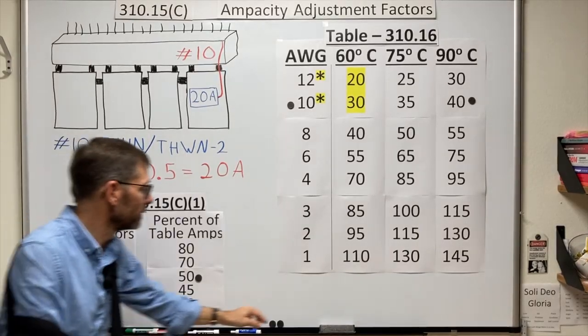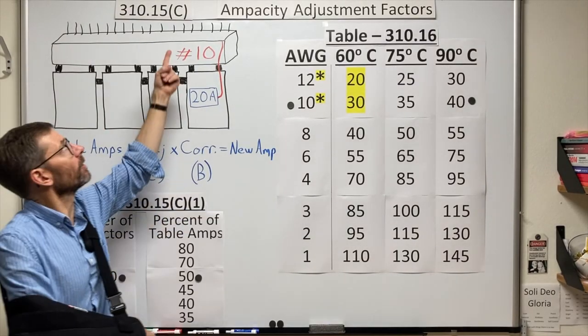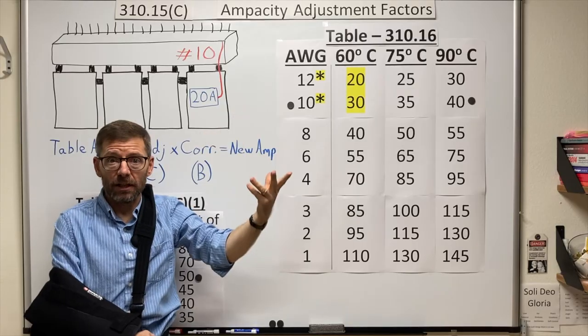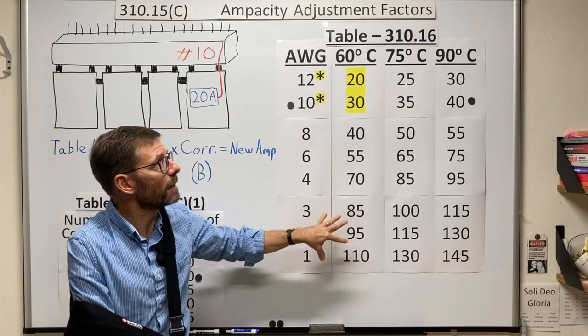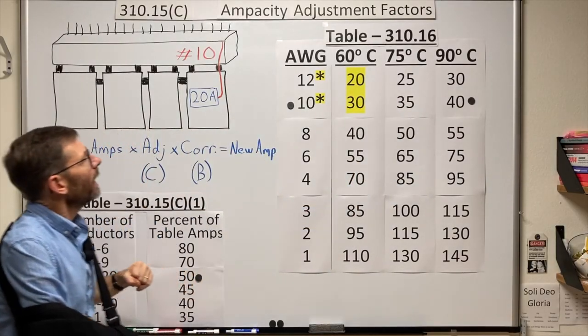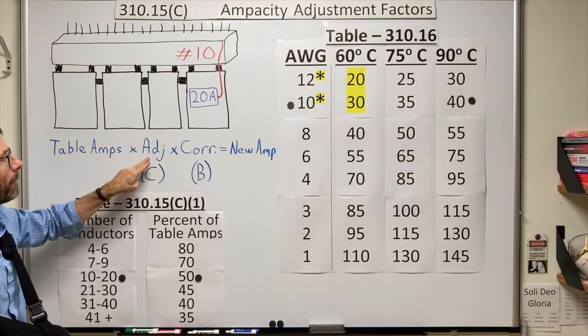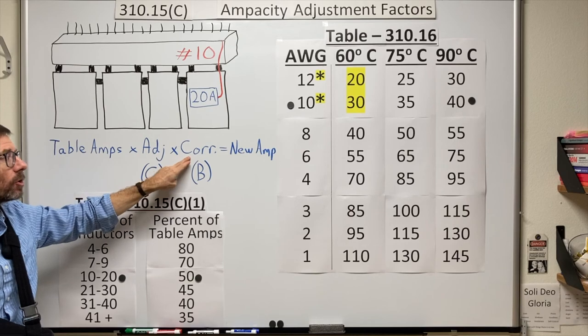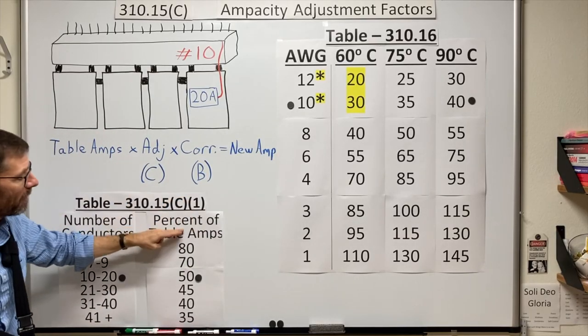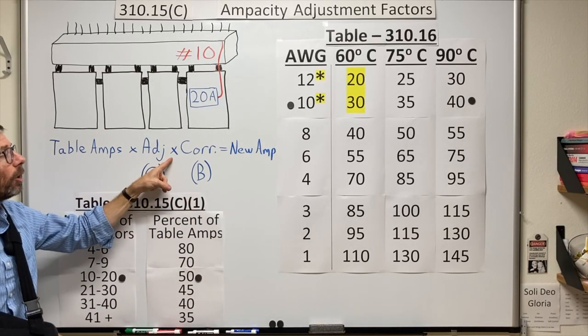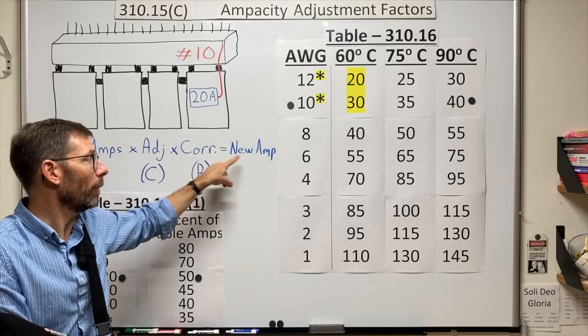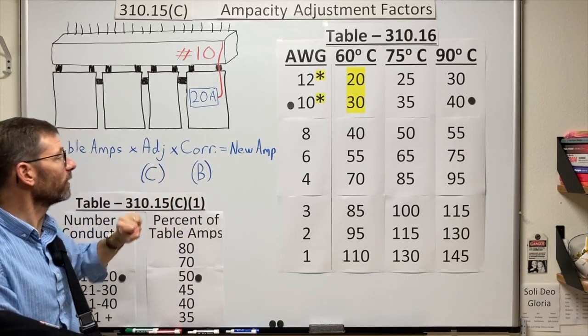One final comment I want to make here. This video has been about 310.15(C) ampacity adjustment. But if we look at B, that's another video, it's on temperature correction. How do we adjust these amps if the ambient temperature is different than that that the table is rated for? And if we need to do both of these, ampacity adjustment from C, and correction from B, the process would be take my table amps, multiply by my factor for the adjustment, and then multiply again by the factor from the tables for temperature correction. And that would equal the new amps. So if you have to employ both of them, that's the process.